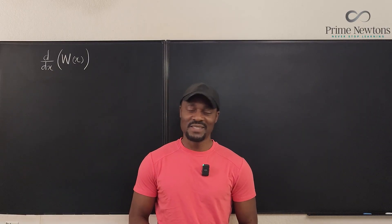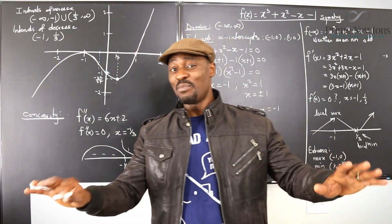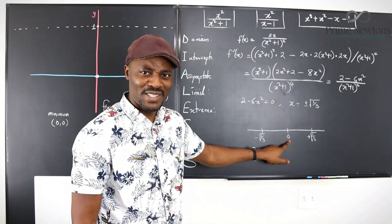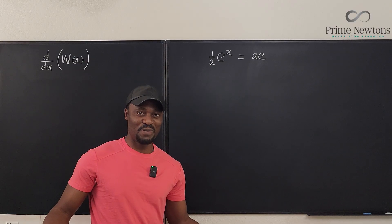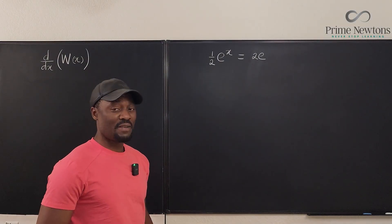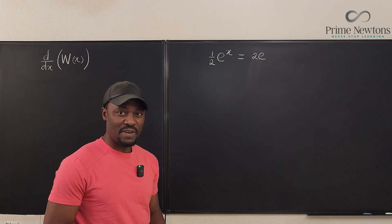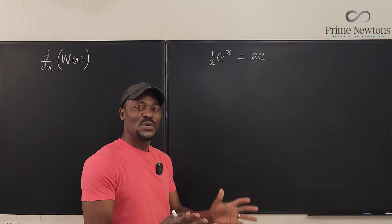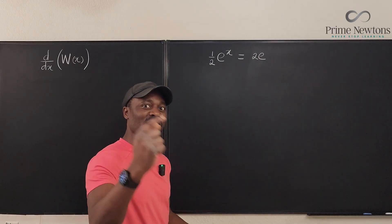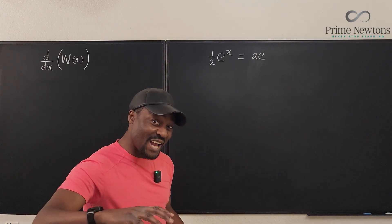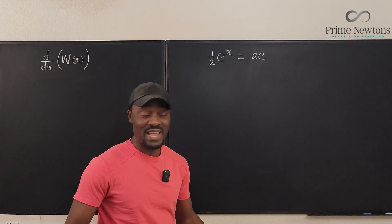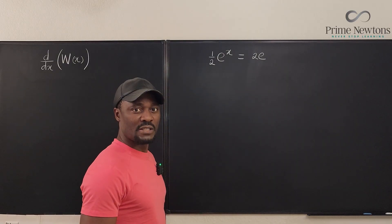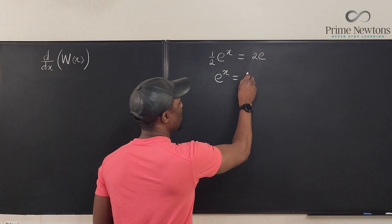Let's get into it. The first problem: we have one-half of e to the X equals 2e, and we're trying to find X. Right away you can tell that as long as X is sitting up in the exponent of e, when I take the natural log of both sides I'll get my answer. So I'm going to multiply both sides by 2 so that I have e to the X equals 4e.